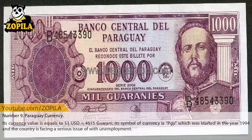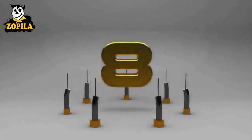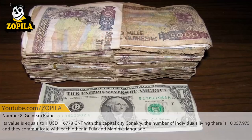Number 9: Paraguay's currency, the Guarani. Its value is $1 USD equals 4,615 Guarani. Its currency symbol is PGY, which was introduced in the year 1994. The country is facing a serious issue of unemployment.